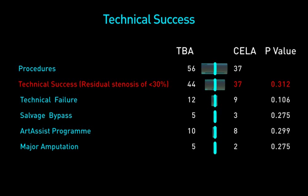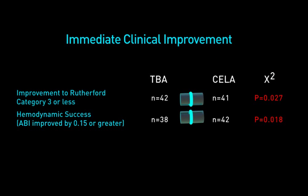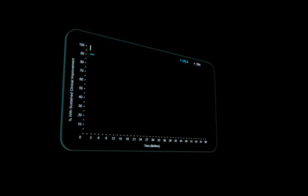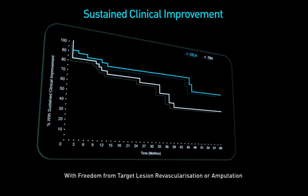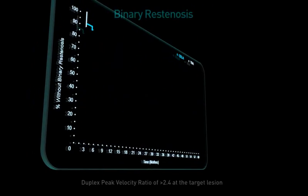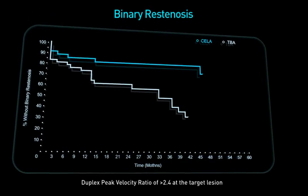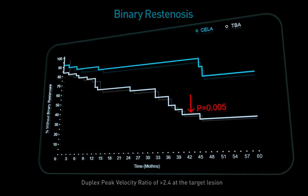We had no related procedure mortality. Immediate clinical improvement, which was statistically significant, was observed in the laser group with 80% improvement to Rutherford category 3 or less with better hemodynamic success. Sustained clinical improvement was statistically significant in favor of laser at 5 years: 76% vs. 62%. Binary restenosis was statistically in favor of laser at 5 years: 78% vs. 49%.